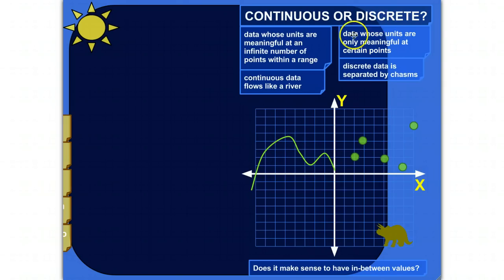Discrete data is data whose units are only meaningful at certain points. And discrete means kind of separated or not attached to the others. So I describe it as discrete data is separated by chasms. It's kind of melodramatic, but it helps me remember. If you were to visualize it, it would look like this. The points aren't attached to each other. There's only certain values that make sense. So positive 2, positive 3, but not 2 point blah blah blah in between. It's got to be 2 or it's got to be 3.